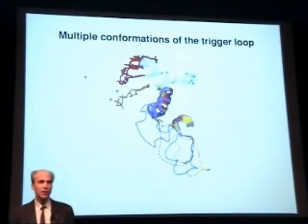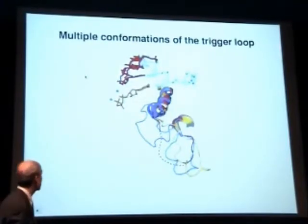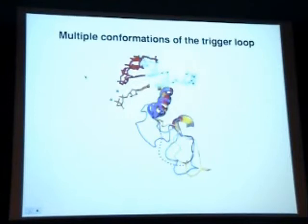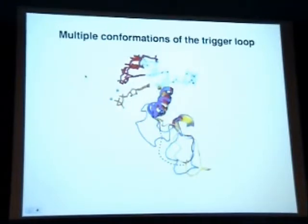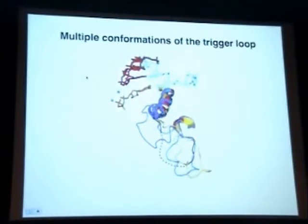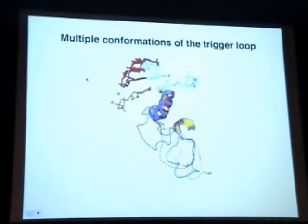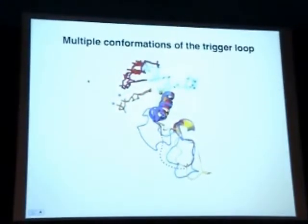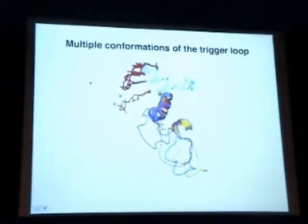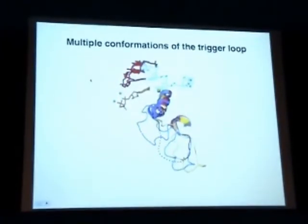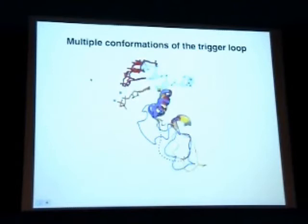The trigger loop had previously been seen in many structures — so far in a dozen polymerase structures — but only in the two recently solved structures with a correctly matched nucleotide in the addition site is it in proximity to the nucleotide. That is the conformation shown in purple. In all other cases, shown as a dashed red line and in blue and yellow, it is some 30 Angstroms distant from the nucleotide in the addition site.